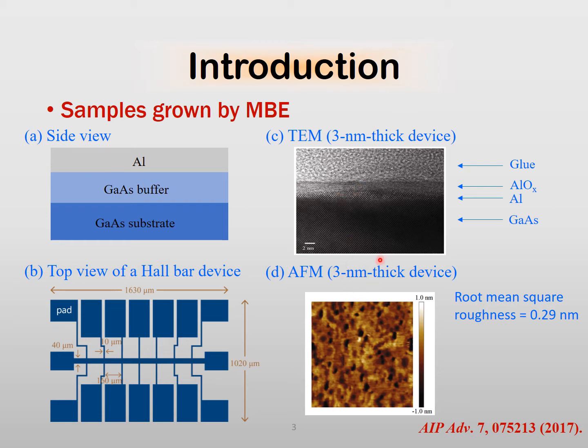The devices are air stable for over a year. For the 3 nanometer thick aluminum nanofilm, the surface roughness RMS is around 0.29 nanometers. The aluminum oxide layer is around 1 to 2 nanometers. We process our Hall bar devices by optical lithography. Preparing these devices is not straightforward and the details can be found in this paper.